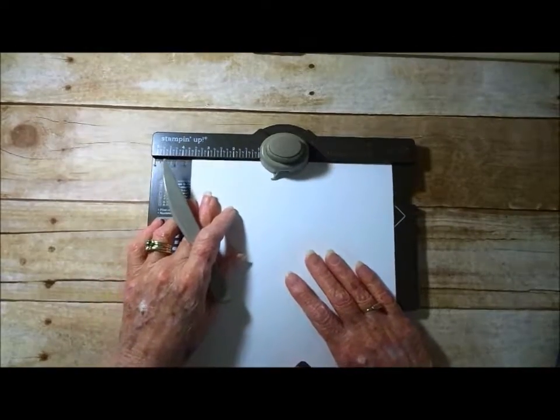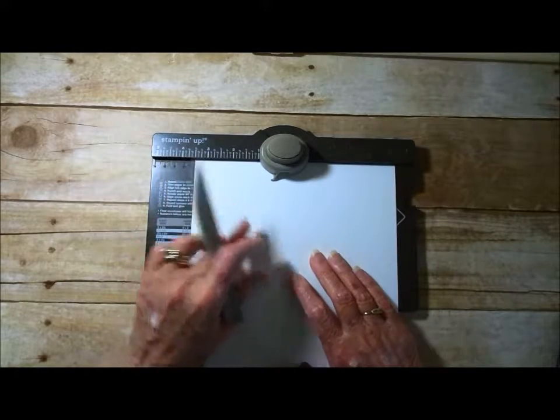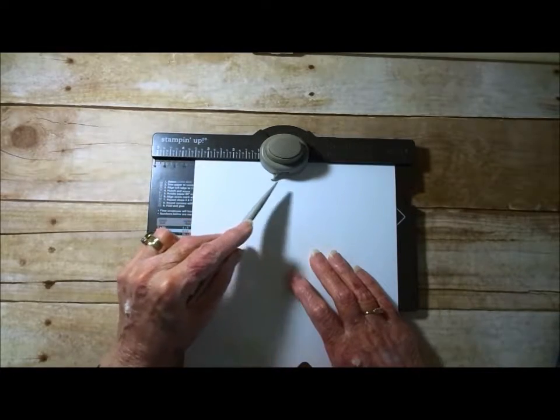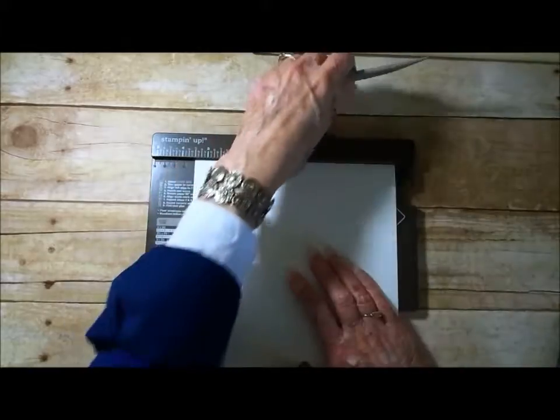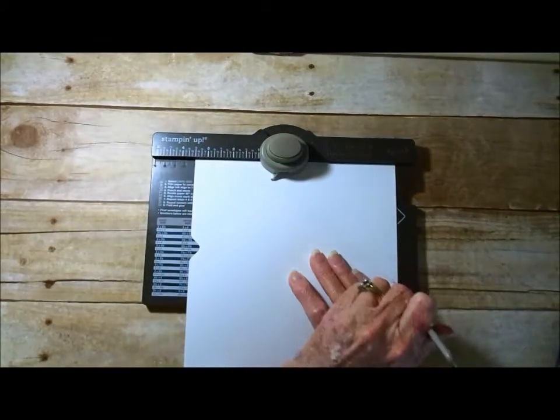Turn it one more turn, line that previous score line up with this gauge right here. Punch, and score.